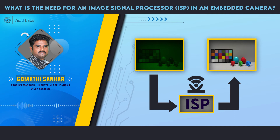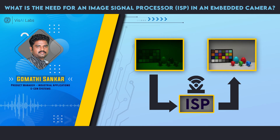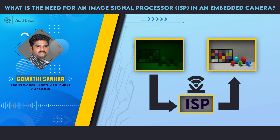If it is a monochrome sensor, we may not need a full-fledged ISP — all we need is just auto exposure, which can be handled in software, or some monochrome cameras come with an auto exposure input. But if it is a color camera, an ISP is a must.